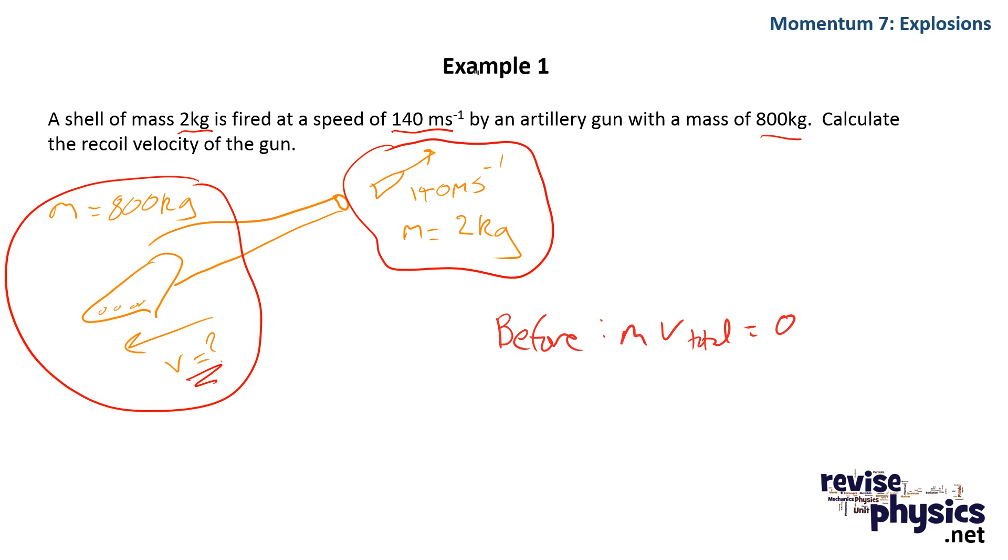Well, we know that the total momentum before the shell was fired is zero. Since m v in this direction has to equal m v in that direction, or at least the magnitudes do, because it's going to be traveling in a negative direction on that side,